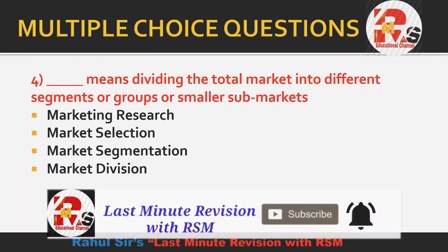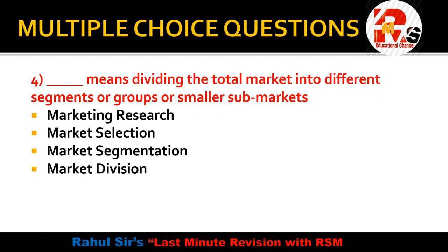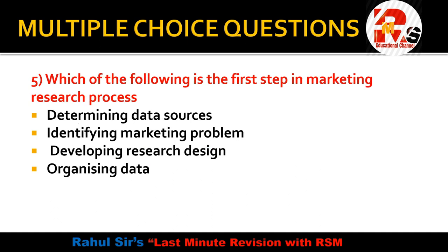Question number 4: Dividing the total market into different segments or groups — smaller sub-markets — is called Marketing research, Market selection, Market segmentation, or Market division. Remember STP: S is Segmentation, T is Targeting, P is Positioning. When we divide the market into different groups, that is called market segmentation. The answer is Market segmentation.